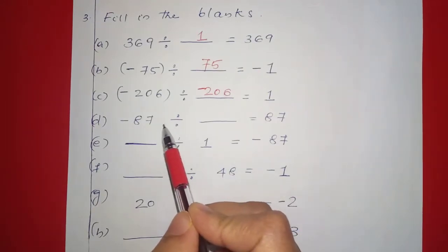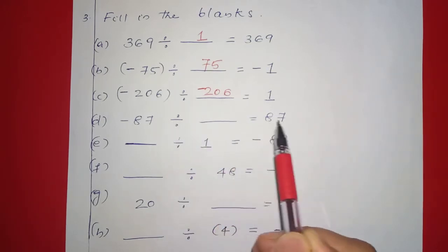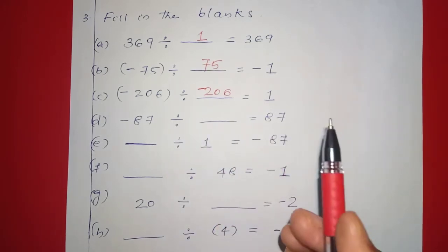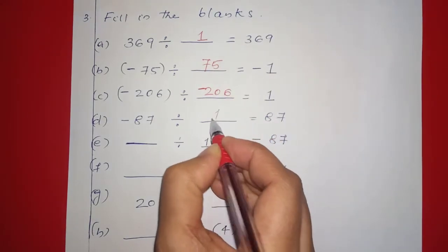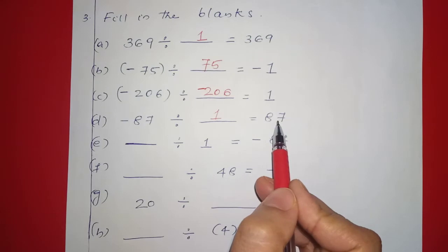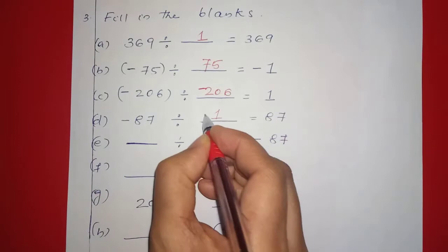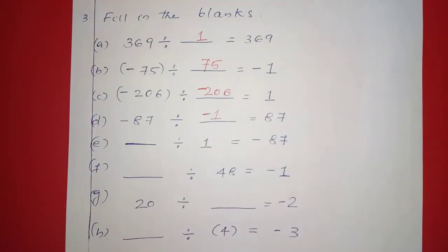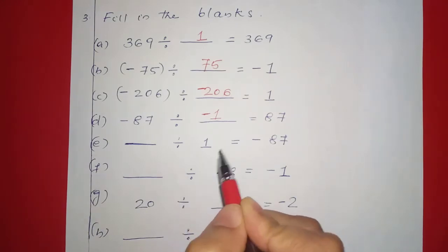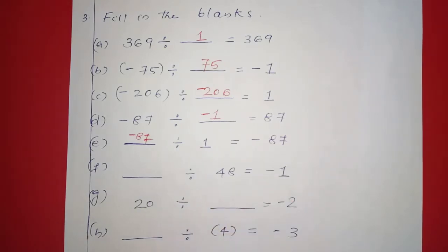Next: negative 87 division dash is equal to 87. For the result to be positive 87, we need to divide by negative 1. So the answer is negative 1. Next: dash division 1 is equal to negative 87. The answer is negative 87, because negative 87 divided by 1 equals negative 87.